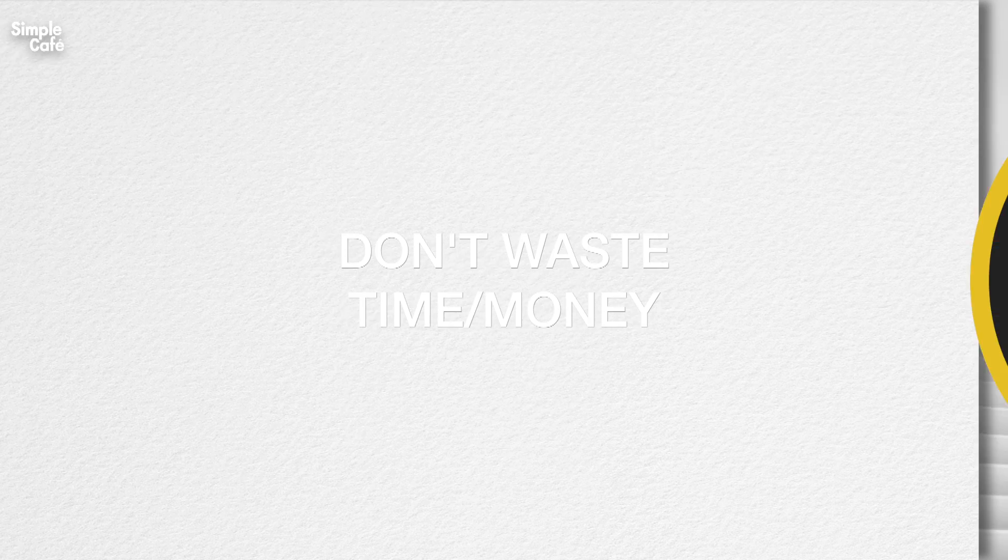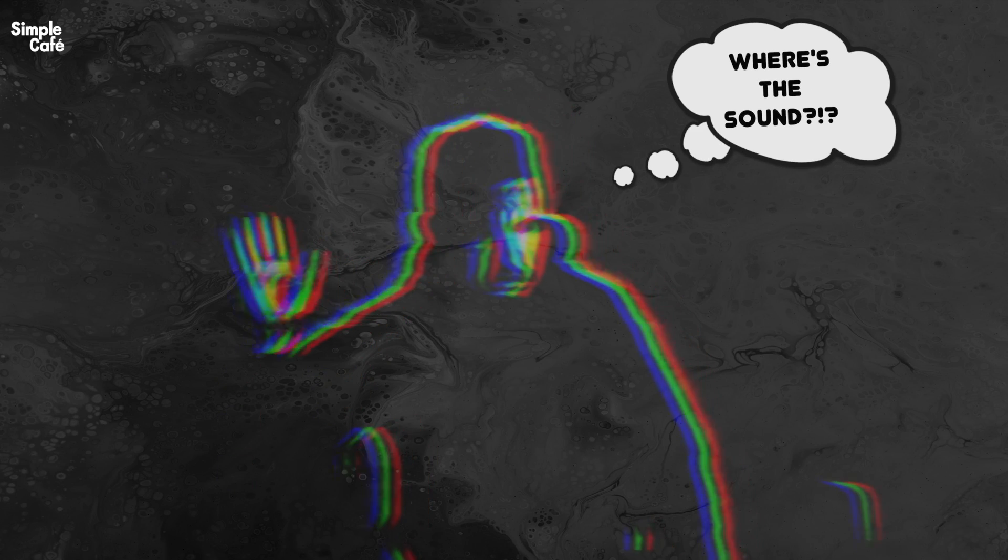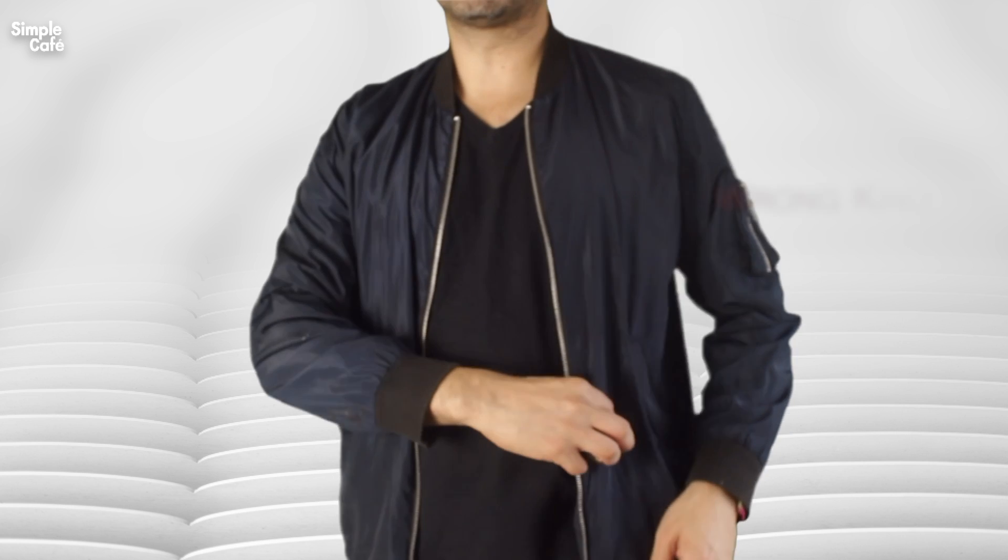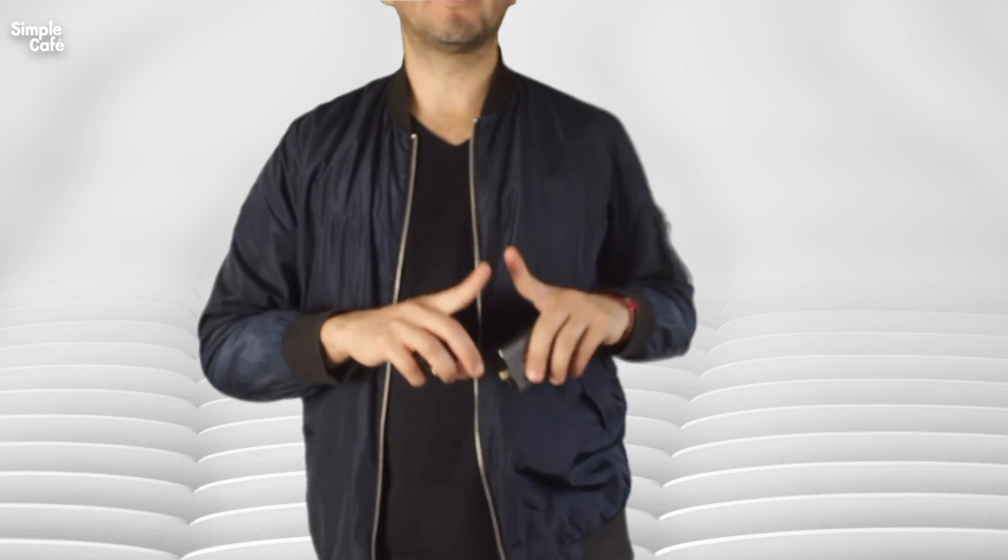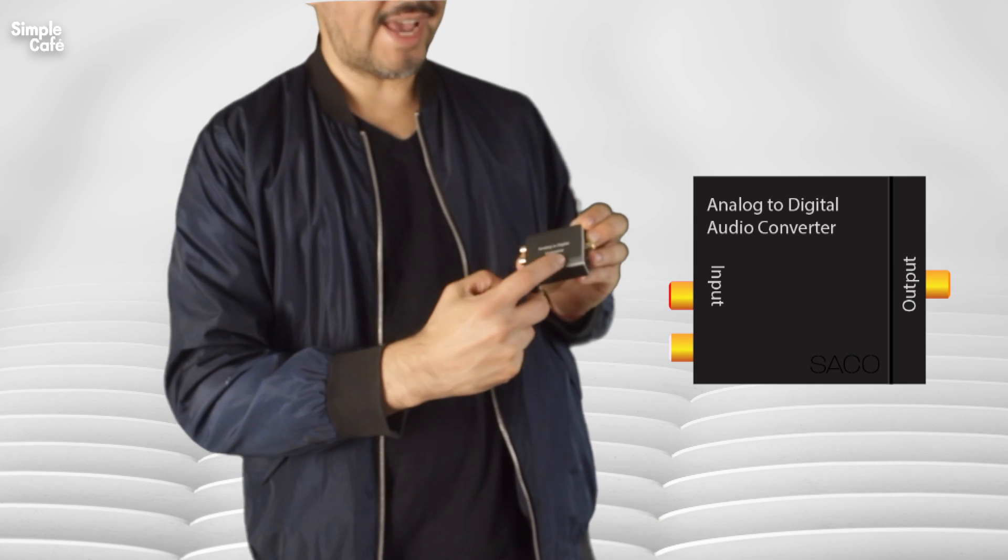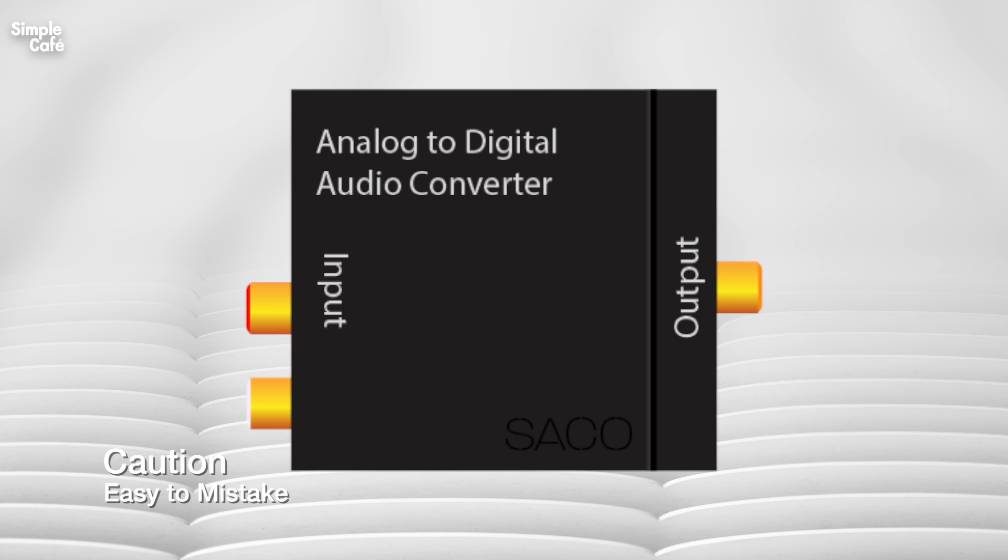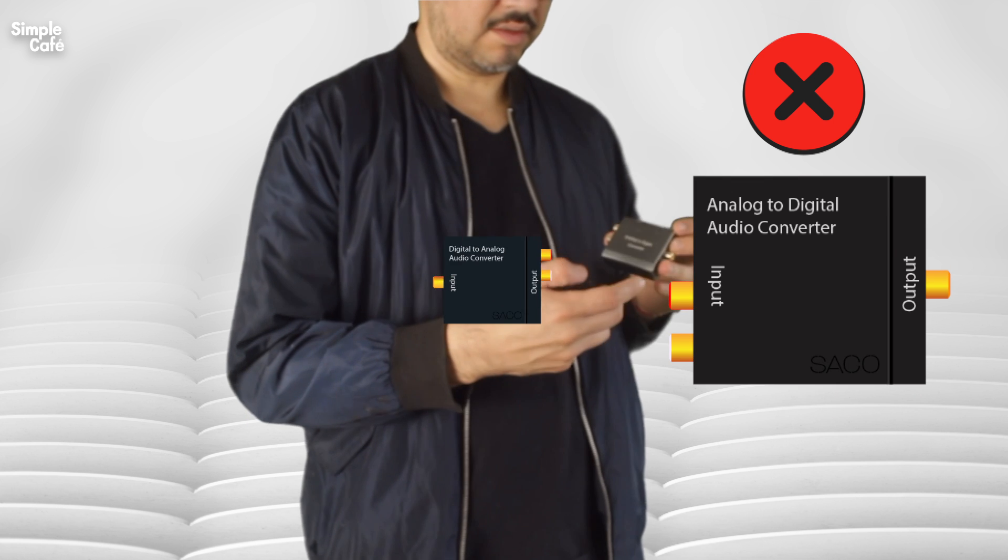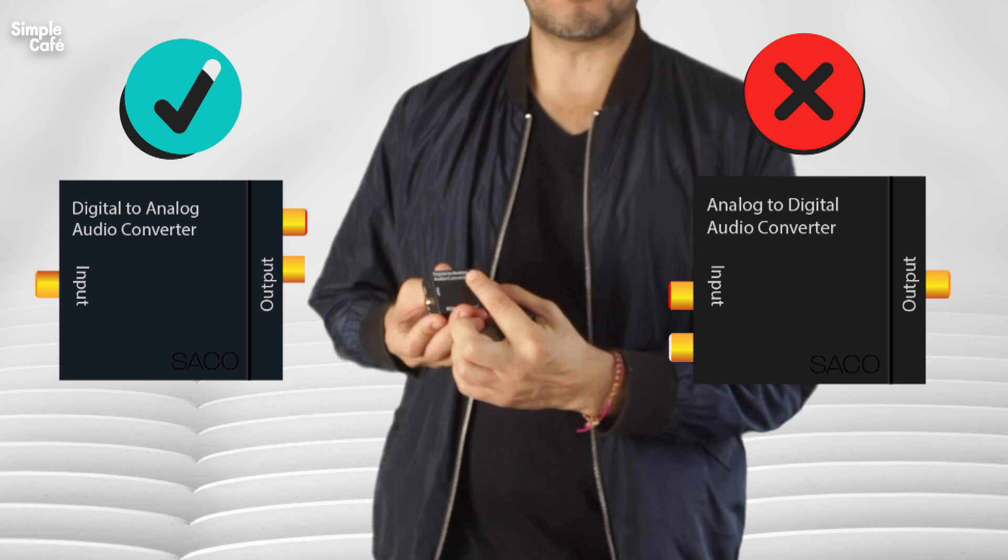Now, before you buy yours, let me tell you how to make sure that you get the right kind so you don't end up wasting time and money. Because believe it or not, there actually is another kind that actually performs the complete opposite function. See, this one is called an analog-to-digital converter, while this one, the right one, is called a digital-to-analog converter.